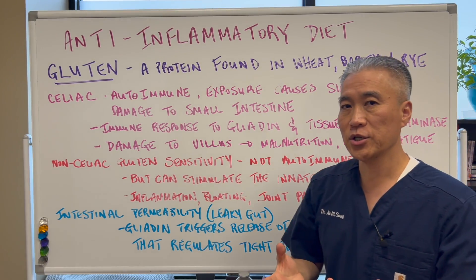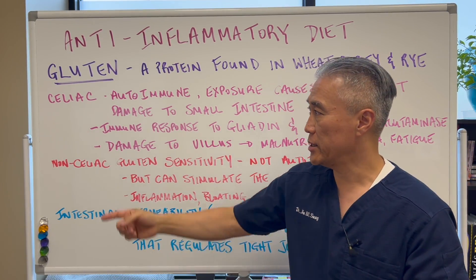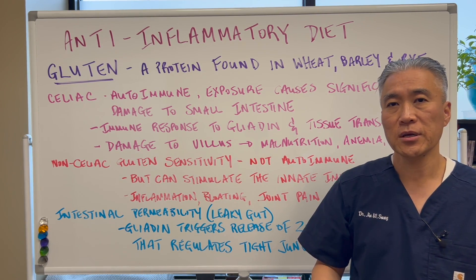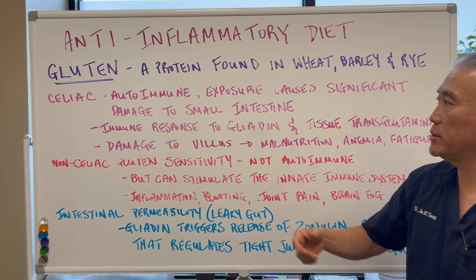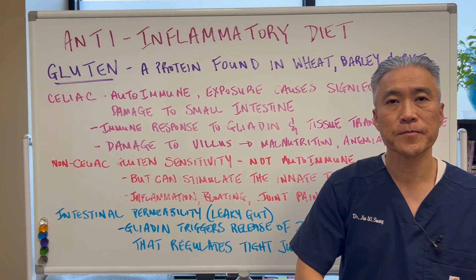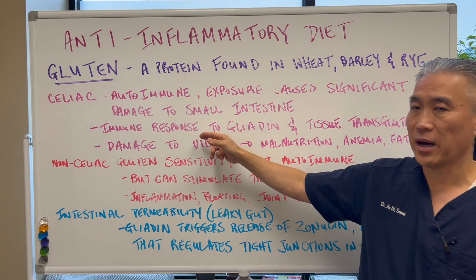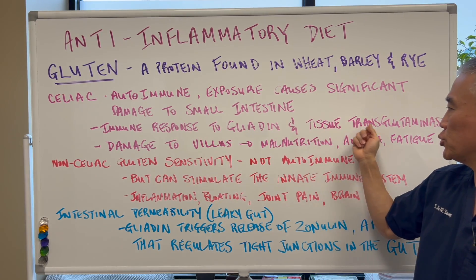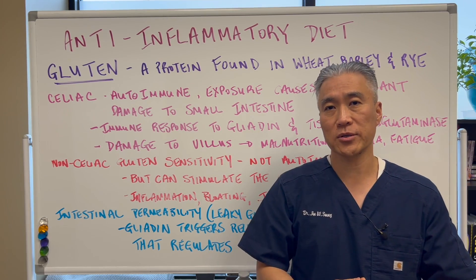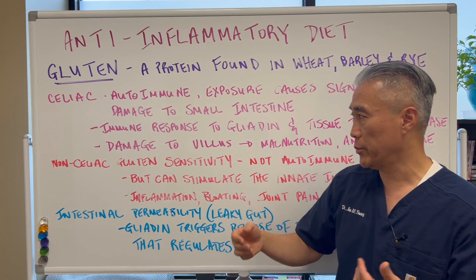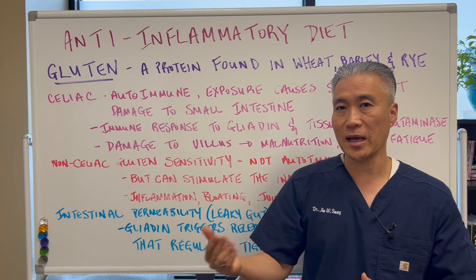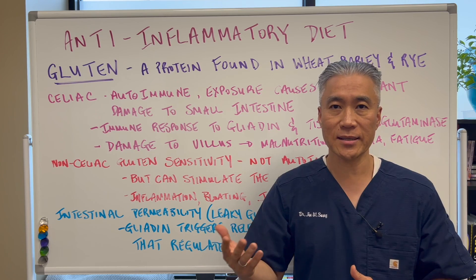The most common condition that people know about is celiac disease. This is an autoimmune condition, and when you consume gluten you have damage to the small intestine. Basically you're going to have an immune response to gliadin and tissue transglutaminase — this is what they check on your blood work. So if you have antibodies or immunoglobulins to gliadin and transglutaminase, they can basically diagnose you with celiac disease.